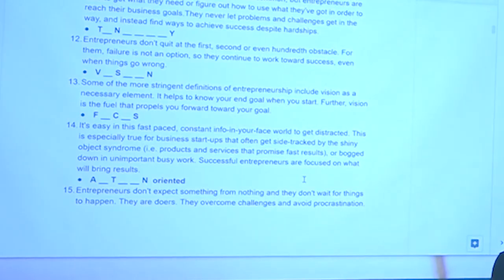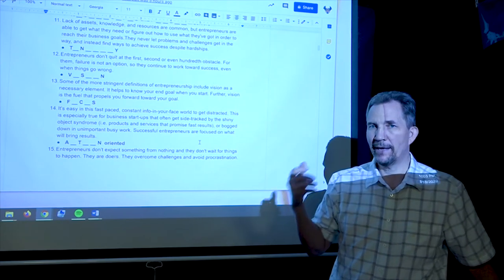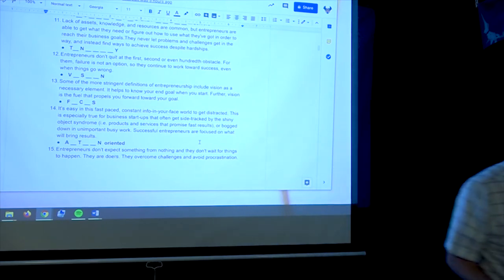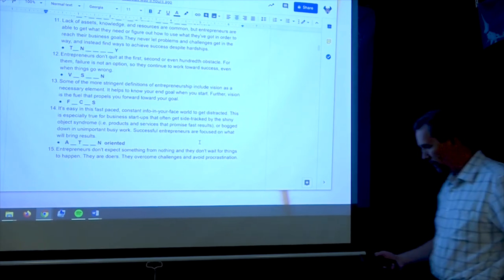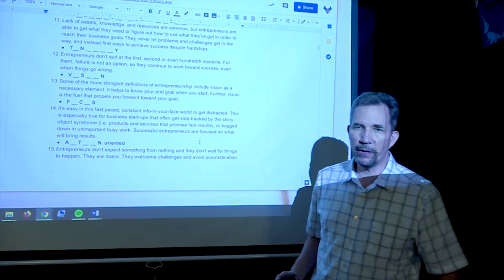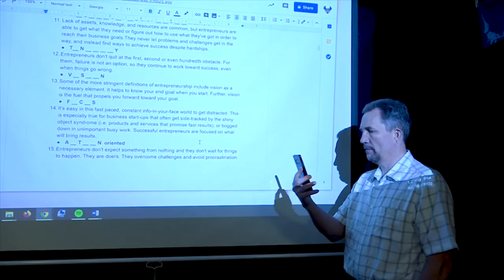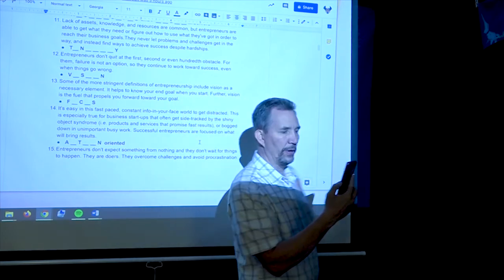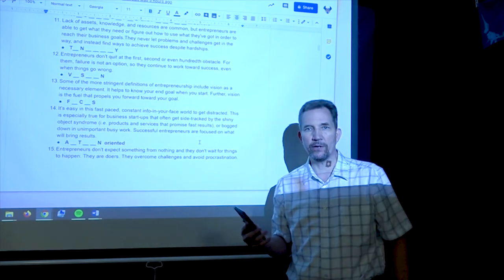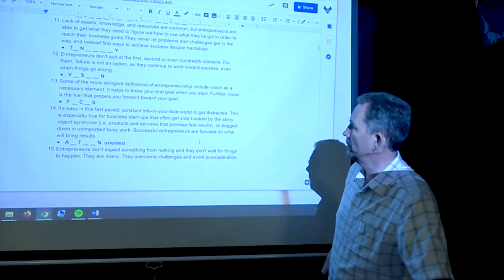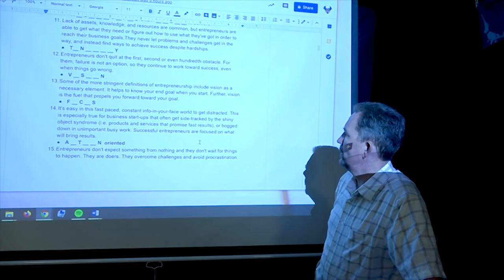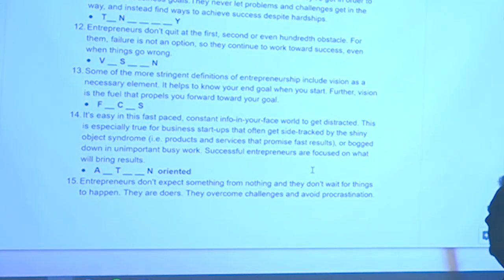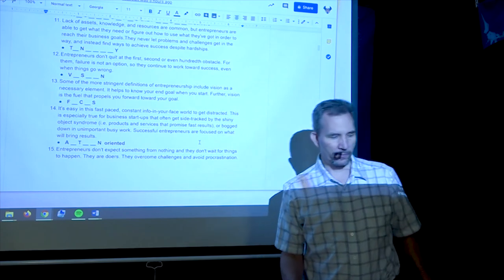It's easy in this fast-paced, constant info-in-your-face world to get distracted. What is that thing that you're always looking at? If an alien came to scout out our world and reported back to the mothership, they'd say these earthlings are going to be easy to take over because they have this mind control device. All we have to do is take control of the mind control device, and we'll have control of them. So we get distracted easily or bogged down in unimportant busy work. Successful entrepreneurs are focused on what will bring results.